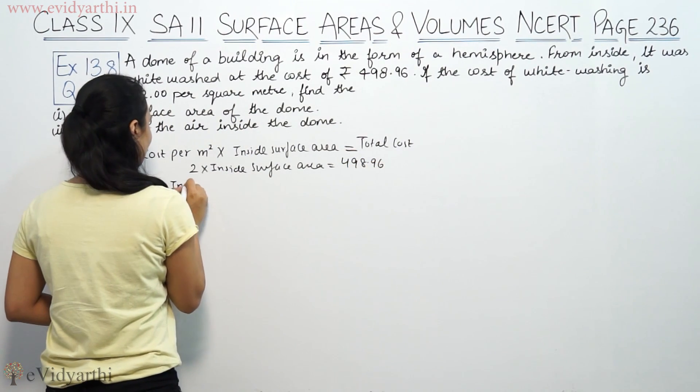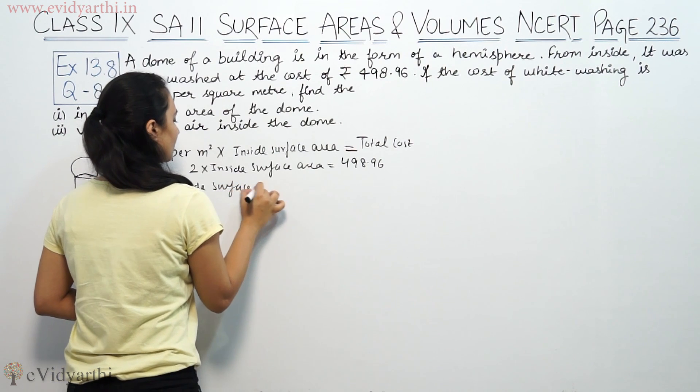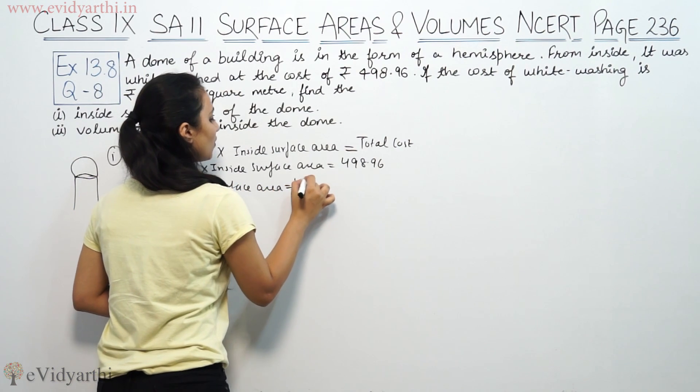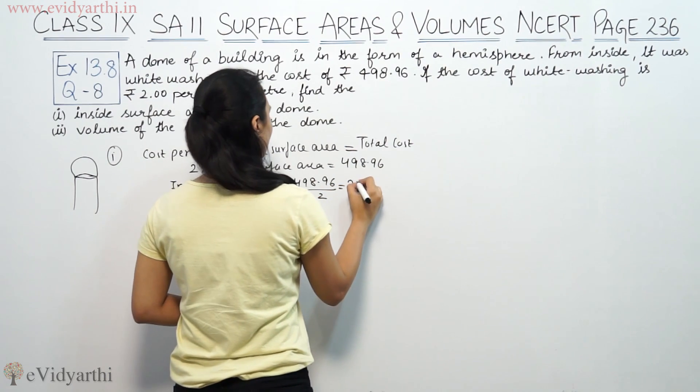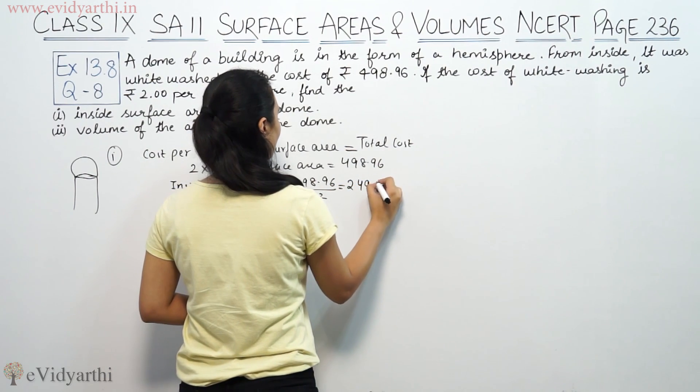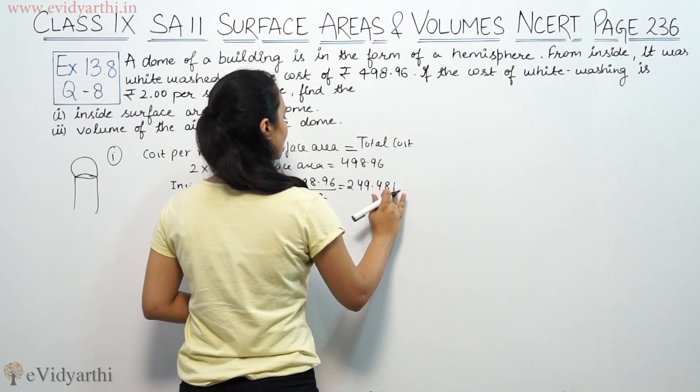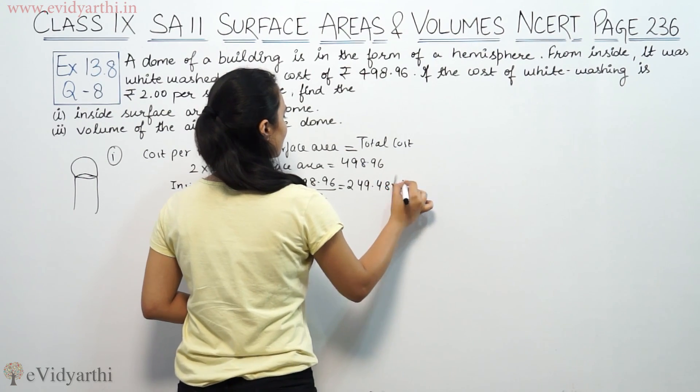So inside surface area equals 498.96 divided by 2, which is 249.48 meter square. This is the inside surface area.